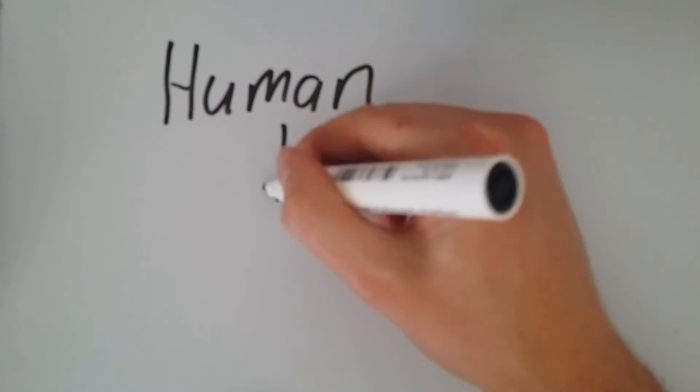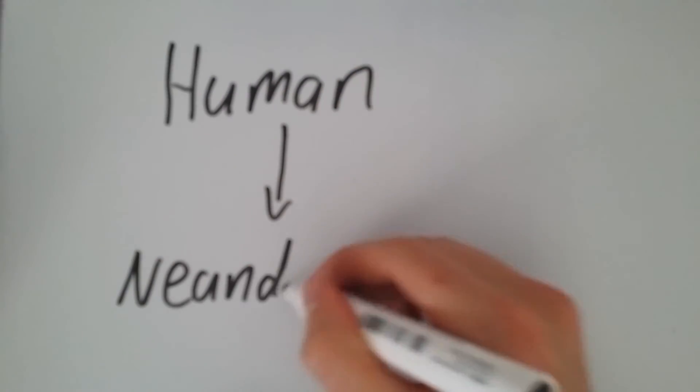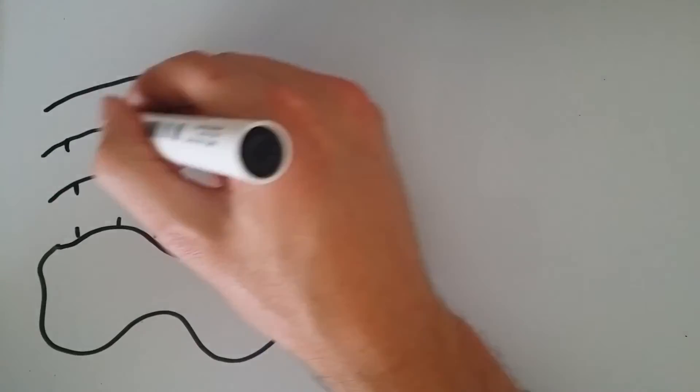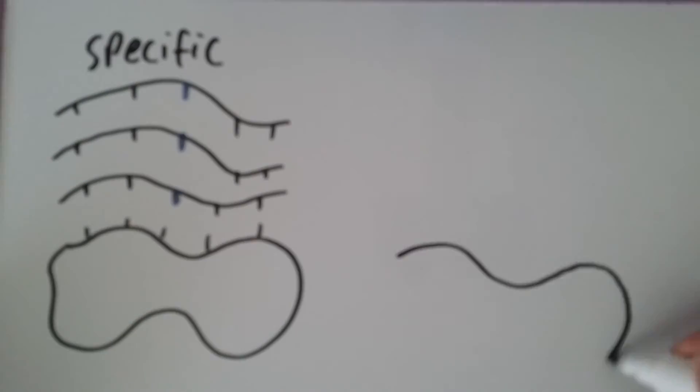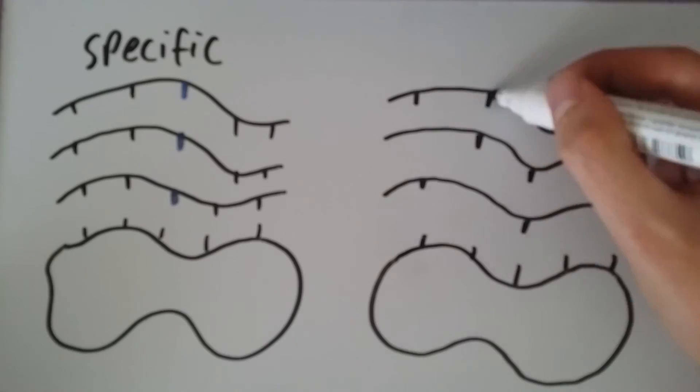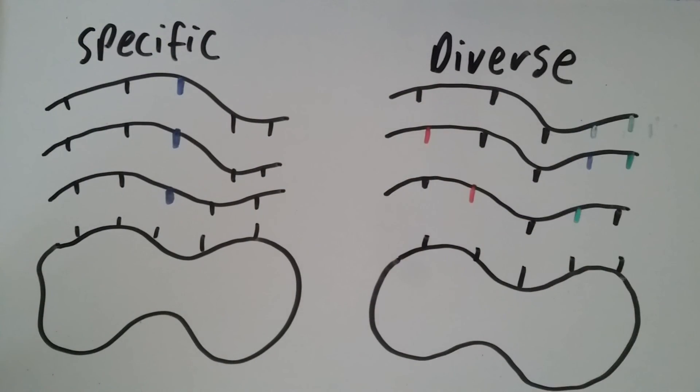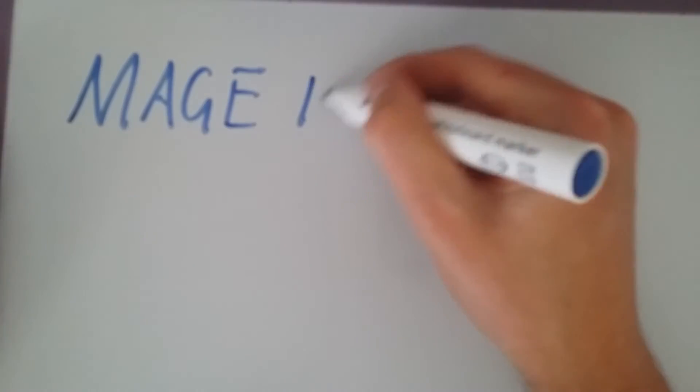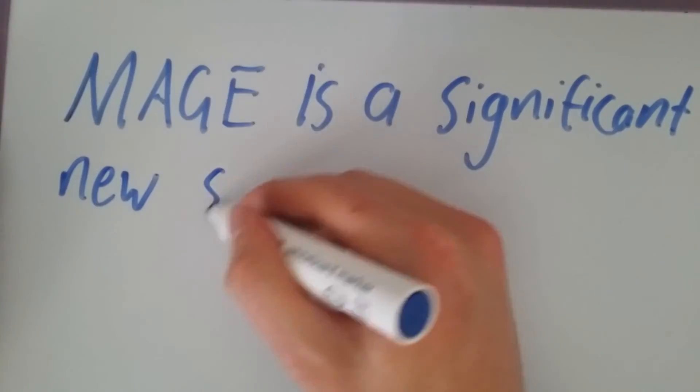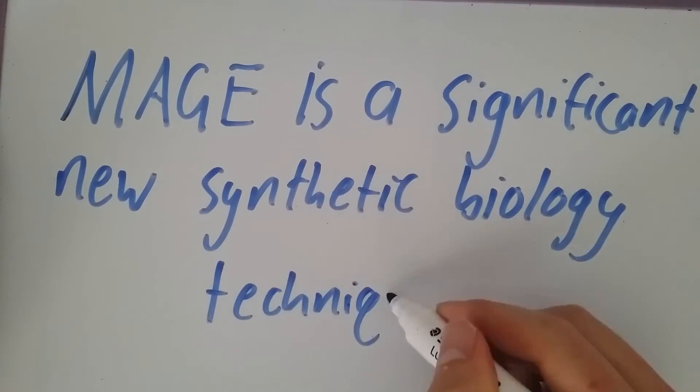Likewise, the same principle could be applied to bringing the Neanderthal back by using a human genome. MAGE is a versatile technology with many applications, from making specific changes within a genome to performing whole genome directed evolution. MAGE is thus a very significant new technology for synthetic biologists.